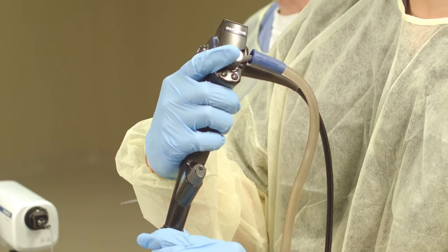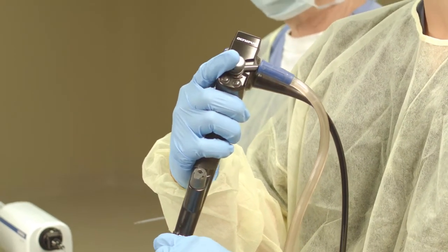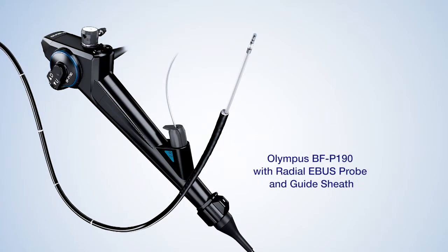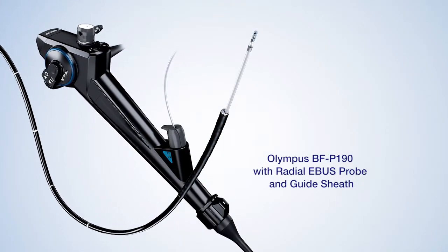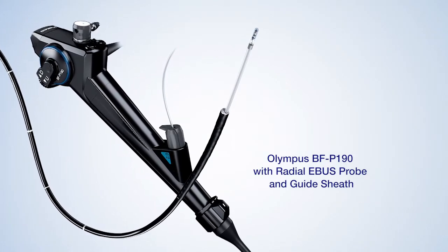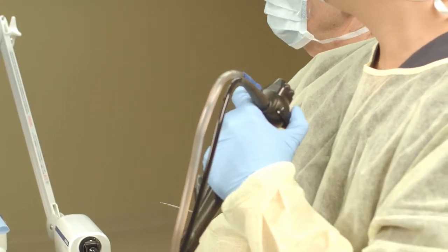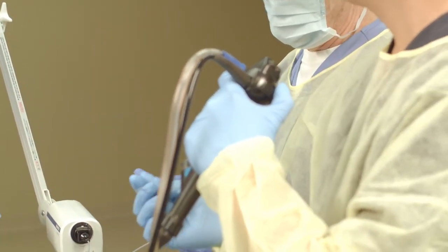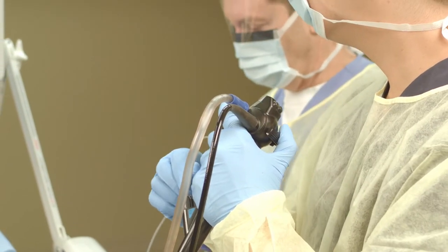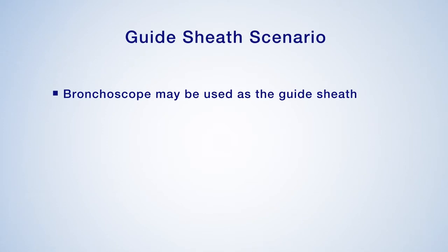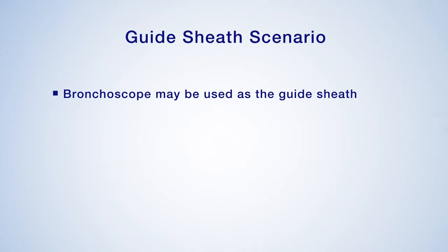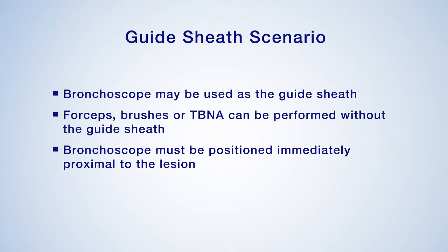Smaller caliber bronchoscopes, such as the 4.2-millimeter outer diameter BFP190, allow improved accessibility to the lung periphery such that the bronchoscope may be advanced all the way to or in close proximity to pulmonary nodules. The bronchoscopist may choose to use the guide sheath kit in this scenario or may forego the guide sheath if the bronchoscope closely approximates the pulmonary nodule. In this scenario, the bronchoscope may be used as the guide sheath and forceps, brushes, or transbronchial needle aspiration without the guide sheath can be performed with the bronchoscope positioned immediately proximal to the peripheral lesion.